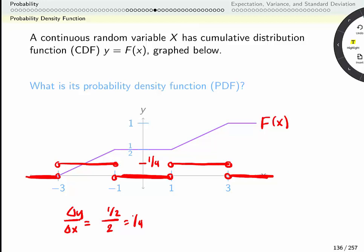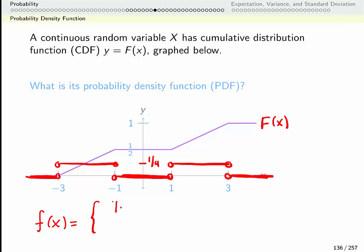I can also define it as a piecewise function. That's the one with the big curly brackets. So my probability density function, I use a lowercase f, looks like 1 quarter if x is in the interval from negative 3 to negative 1 or the interval from 1 to 3. That little u is a union. And it's 0 otherwise.